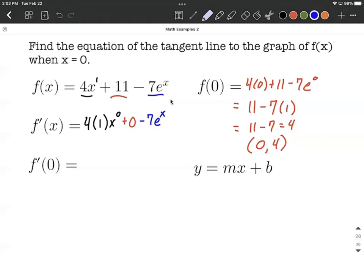Cleaning this up before we evaluate it: 4 times 1 is 4, and x^0 = 1, so this is just 4. We can drop the +0 term, giving us f'(x) = 4 - 7e^x.